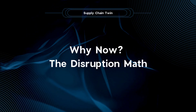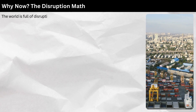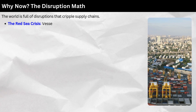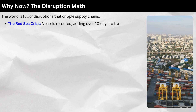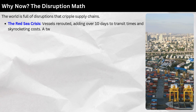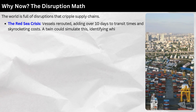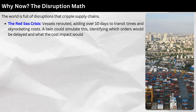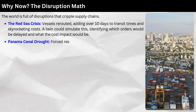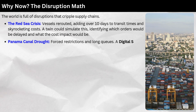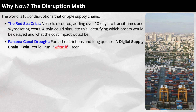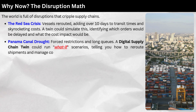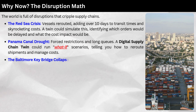Why now? The disruption math. The world is full of disruptions that cripple supply chains. The Red Sea Crisis — vessels rerouted, adding over 10 days to transit times and skyrocketing costs. A twin could simulate this, identifying which orders would be delayed and what the cost impact would be. The Panama Canal Drought forced restrictions and long queues. A digital supply chain twin could run what-if scenarios, telling you how to reroute shipments and manage costs.